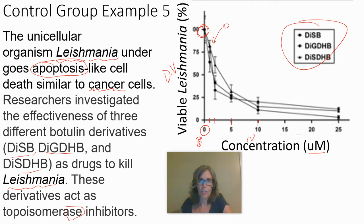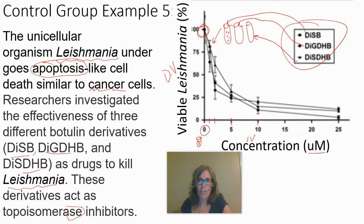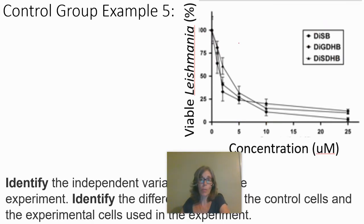At each concentration, there are three test tubes — one with each of the three botulin derivatives — all containing cells. They wait the same amount of time for all of them and measure viability, which decreases depending on which drug is used.